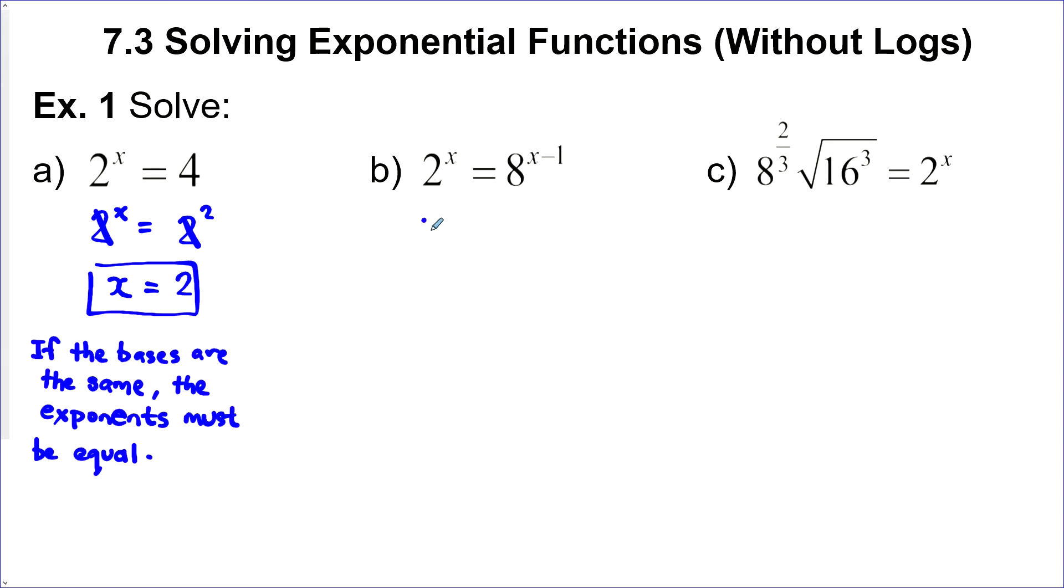This one also has 2 to the power of x on this side, and 8 can be written with the same base. This, 8 is 2 to the power of 3. So, I'll just replace 8 with 2 to the power of 3, and then keep the same exponent there. Now, on this side, we just have 2 to the power of x still, and this side. When we have an exponent and another exponent up here, we multiply those. So, I'm going to do that, 3x minus 3. Now, I've got the same base. The exponents must be equal. So, I'm going to drop the base, and set the exponents equal, and solve.